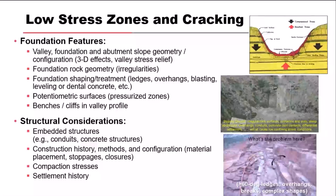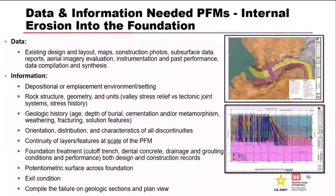Structural considerations include embedded structures, conduits, concrete structures, compaction history, construction history, stresses, and settlement. Going into a risk assessment where we think rock-related foundation conditions could facilitate internal erosion, we need to review all our data ahead of time — layout maps, construction photos from a geologic and geotechnical perspective. Do you have breaks, open cracks? Does it look like it was treated well? Review subsurface data, aerial imagery, all instrumentation — compile and synthesize so you have a geologic model of how that failure mode is influenced by those features.